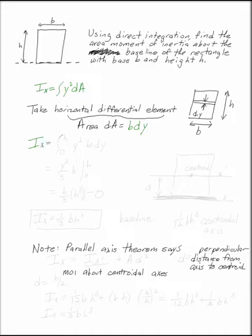Plug that into the integral. ix is the integral of y squared times bdy. My limits of integration now though are from 0 to h. If I evaluate that integral, I get y cubed over 3 times b from 0 to h, which gives me ix equals 1 third bh cubed about the baseline.